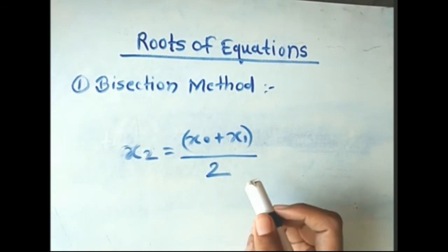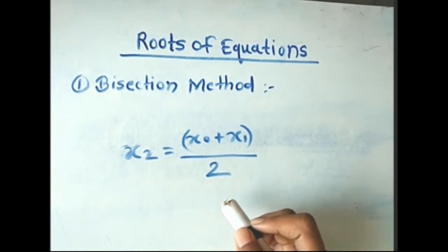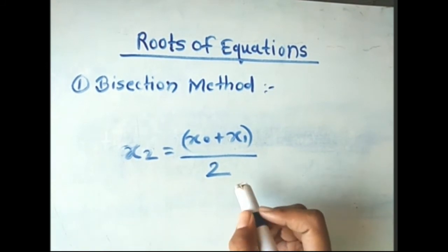Then we replace x₁ by x₂ and bisect the new interval [x₀, x₂] to obtain x₃ = (x₀ + x₂)/2 as the next approximation of the root.